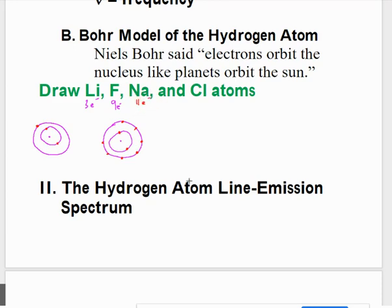Sodium has 11 electrons. We're going to need three energy levels. We have two electrons in the first energy level, eight in the second energy level, plus two in the first makes ten electrons. We have one more to draw, so this is sodium. You can see it has one valence electron in the third energy level.